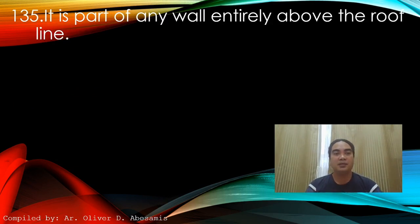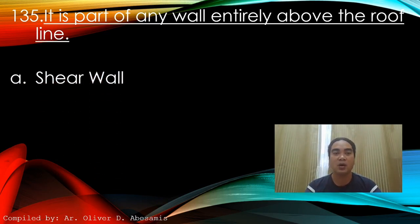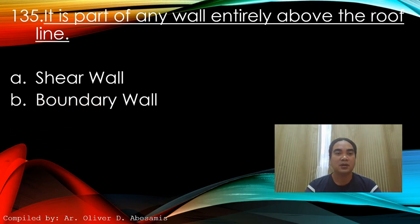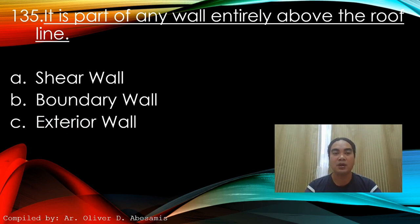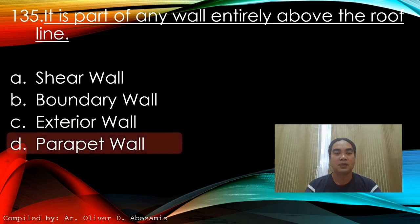Question 135: It is the part of any wall entirely above the roof line. A) Shear wall, B) Boundary wall, C) Exterior wall, D) Parapet wall. Answer: D) Parapet wall.